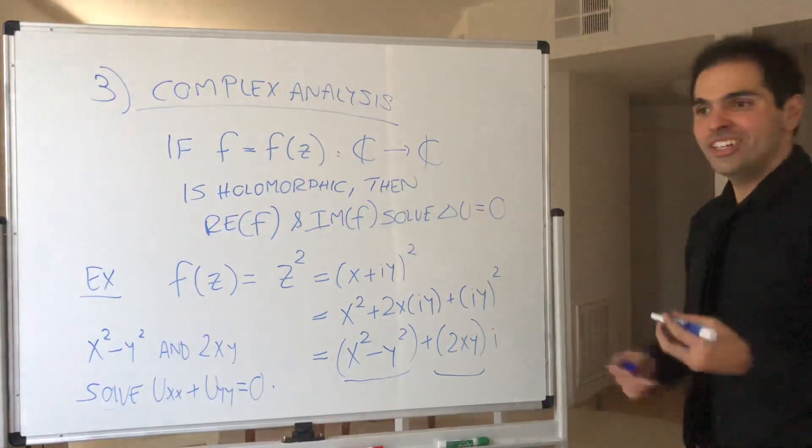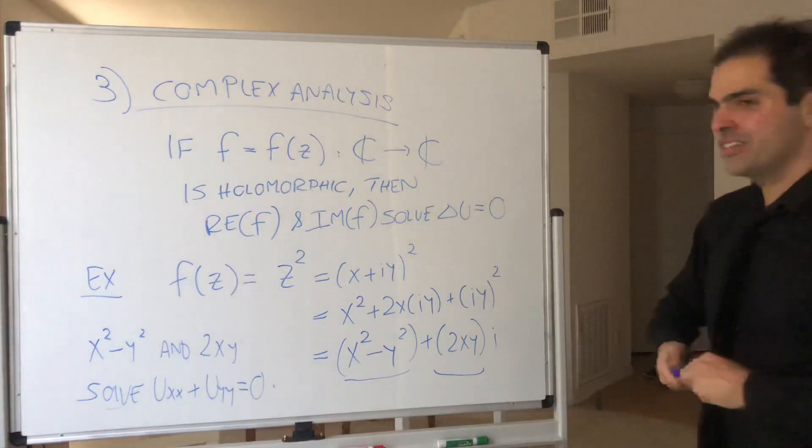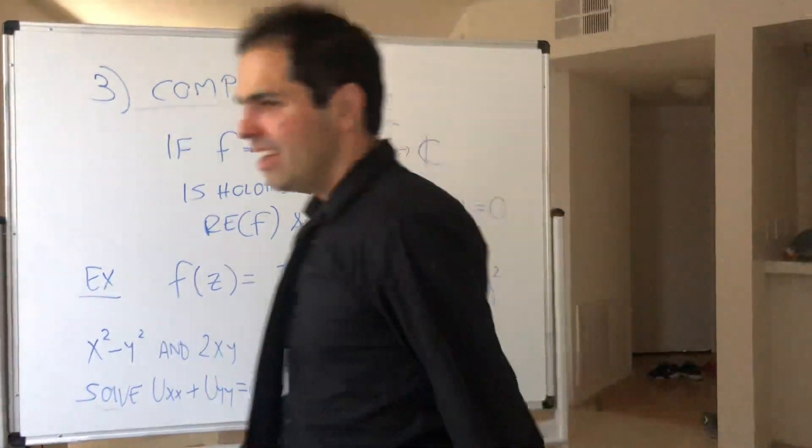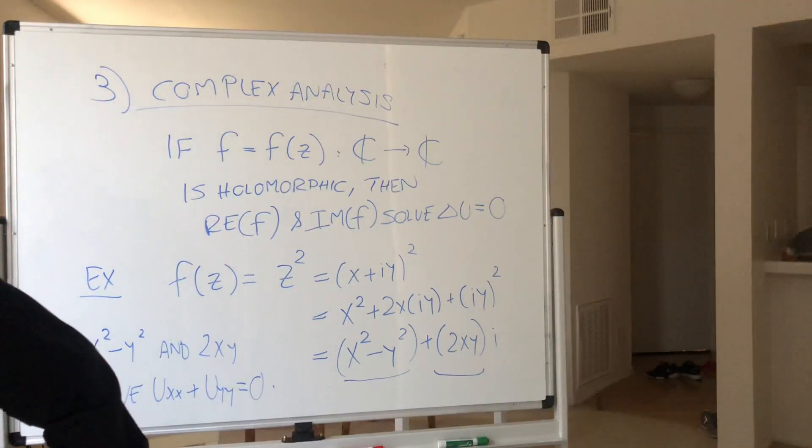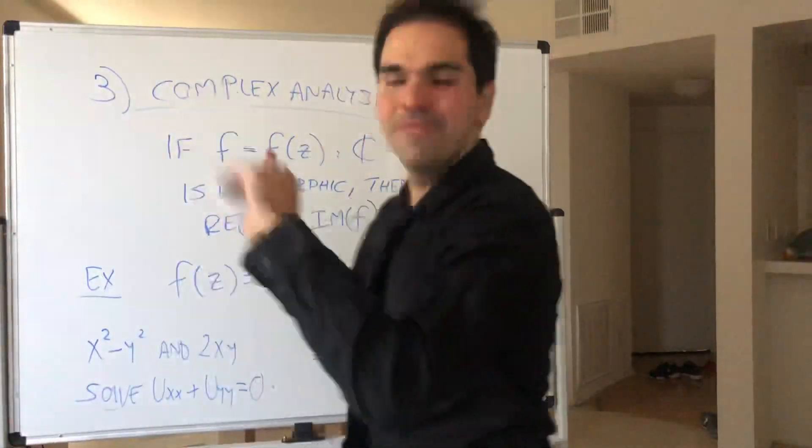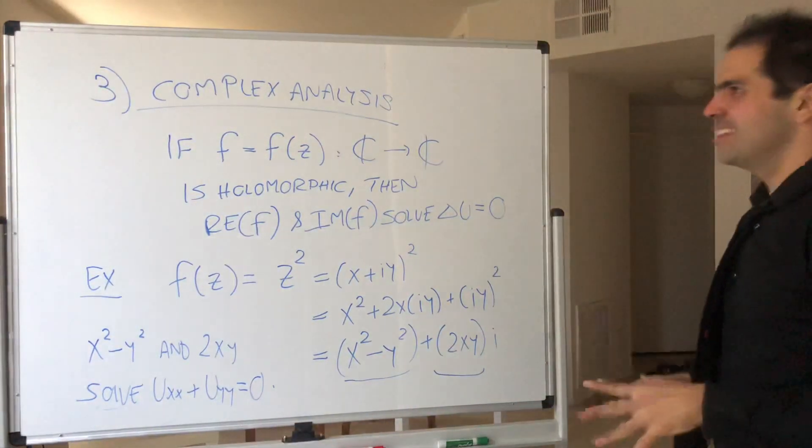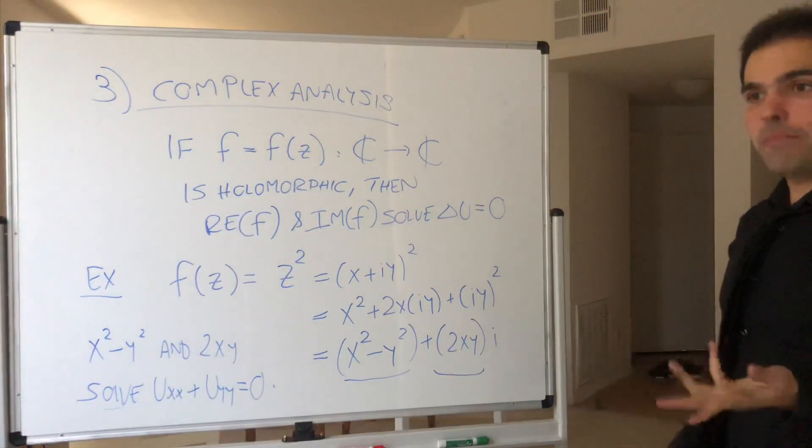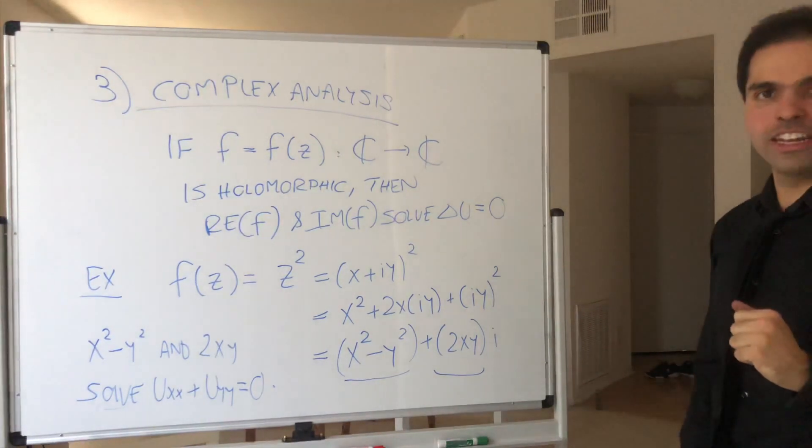So x squared minus y squared and 2xy solve Laplace's equation, which in this case is u_xx plus u_yy equals zero. And you can generate solutions from this. It's very neat. That's one thing.